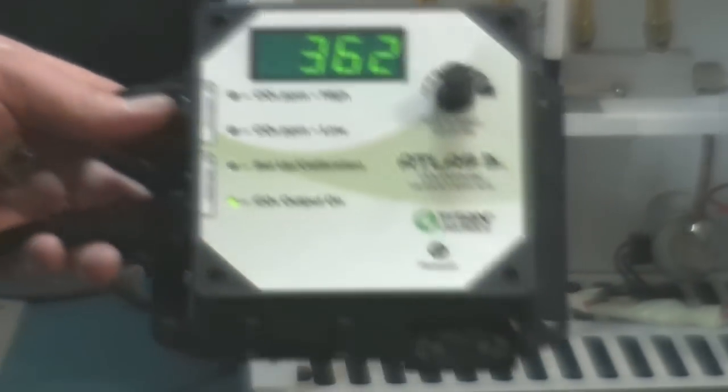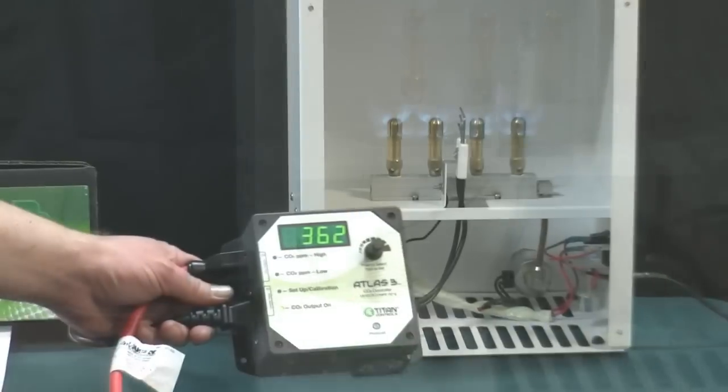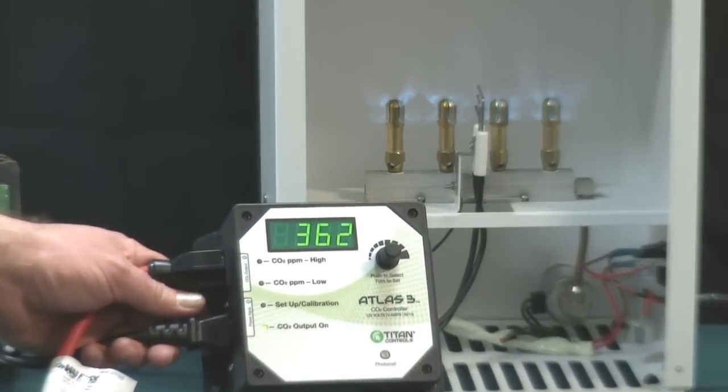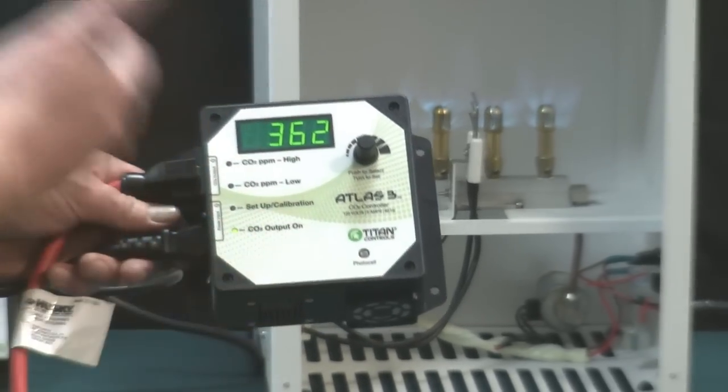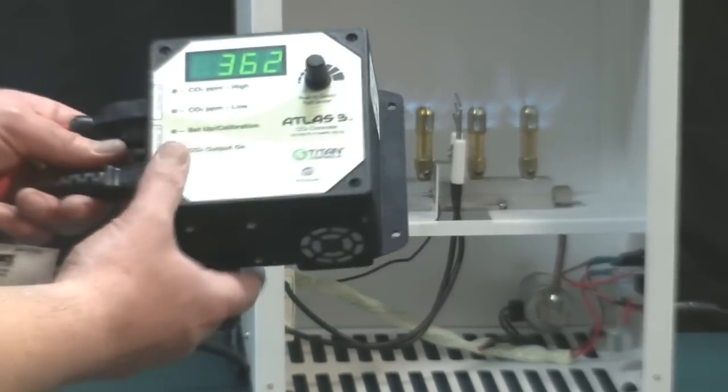Let me show you how this works. Right now, as you can see, the generator is active and is 362 parts per million. If I blow into this and take the parts per million over my set point, watch what happens.